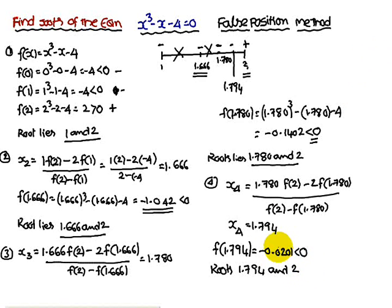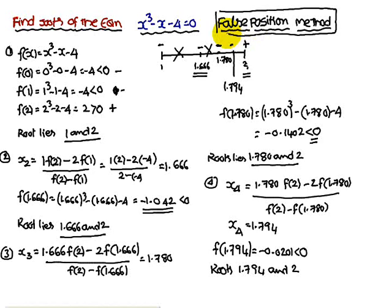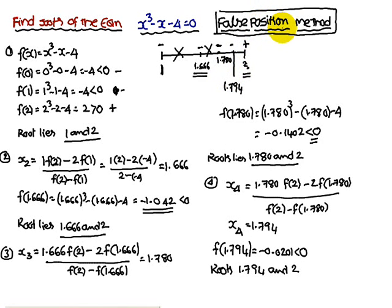Continue this procedure as required — up to x₄ for three stages, or up to x₇ for six stages, and so on. The key formula to remember is: x_new = (x₁·f(x₂) - x₂·f(x₁)) / (f(x₂) - f(x₁)). Always remember that in the False Position Method, the root lies between two opposite signs.